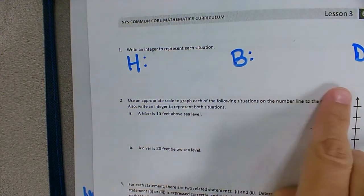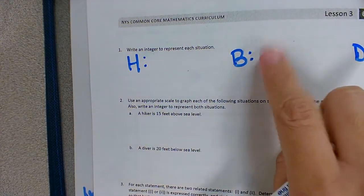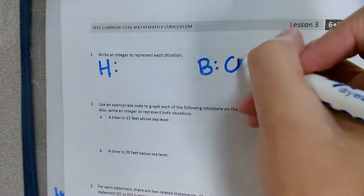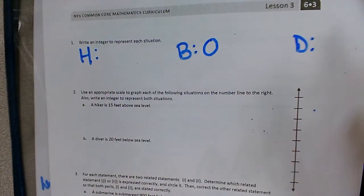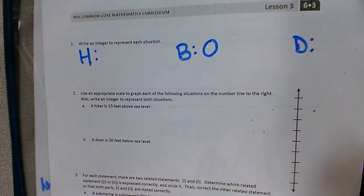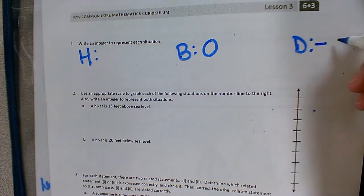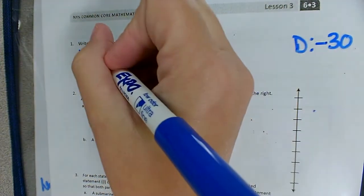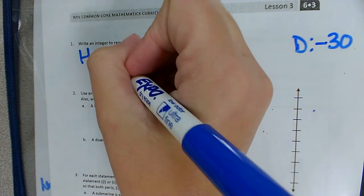So if we think about them as being on a number line, our boat since it's at sea level, the integer would be zero. Our diver is below sea level, so he would be negative 30. And our hiker is above sea level, so he would be 10,560.